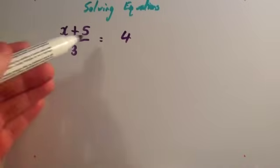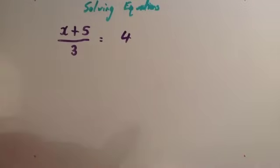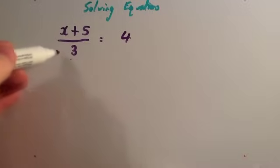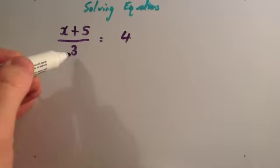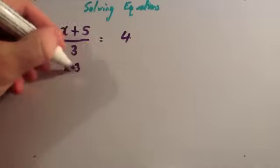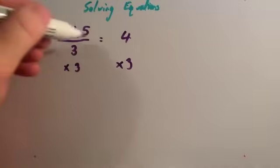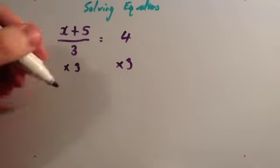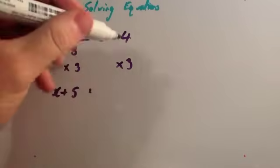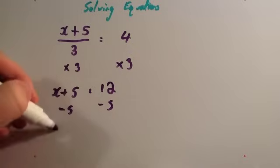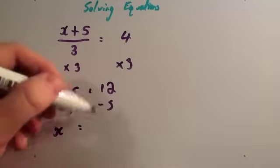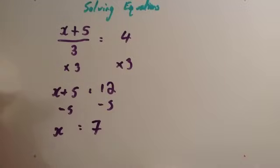This equation is x plus 5, all divided by 3, equals 4. To solve this, get rid of the divide by 3 first because it applies to the whole left-hand side. So multiply both sides by 3 — that gets rid of the divide by 3, leaving x plus 5. On the right-hand side, 4 times 3 is 12. Now we've got x plus 5 equals 12. Get rid of the plus 5 by taking away 5 from both sides — that leaves x on the left, and 12 take away 5 is 7. So the answer is x equals 7.